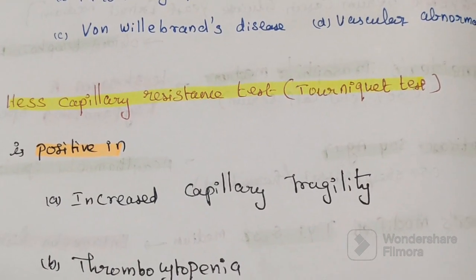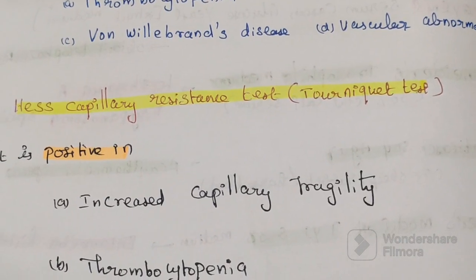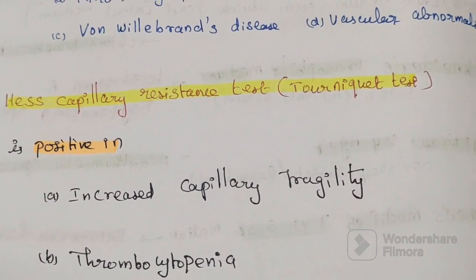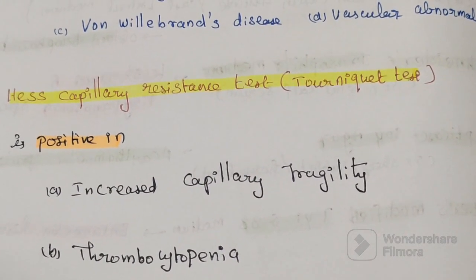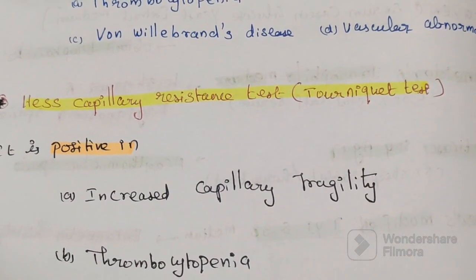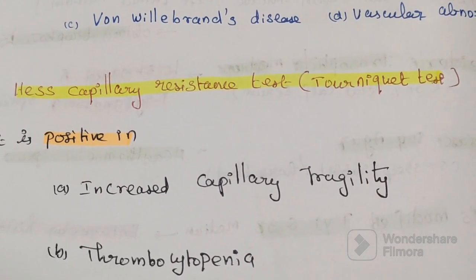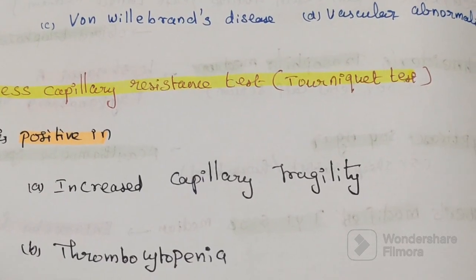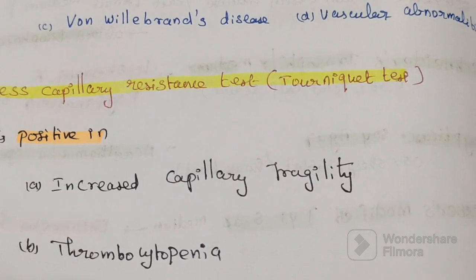The second test is the capillary resistance test (HES-capillary resistant test). It is positive in two conditions: increased capillary fragility and thrombocytopenia.